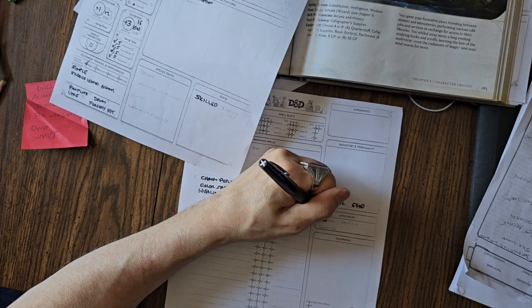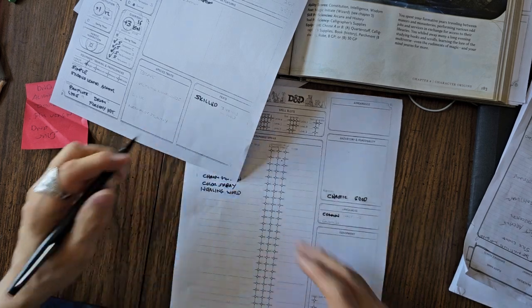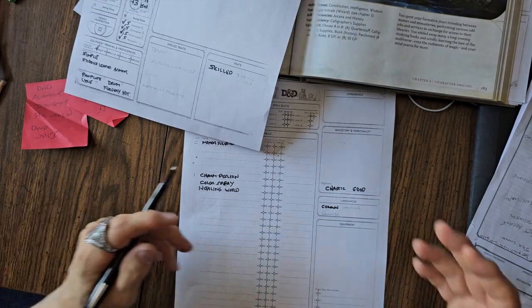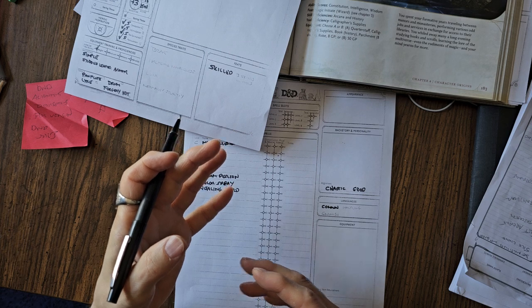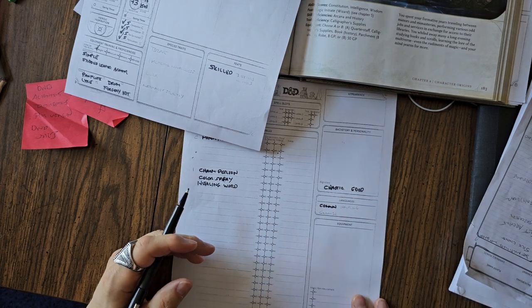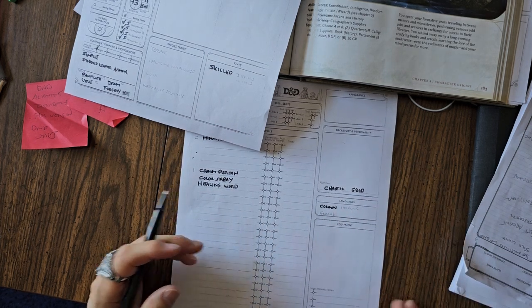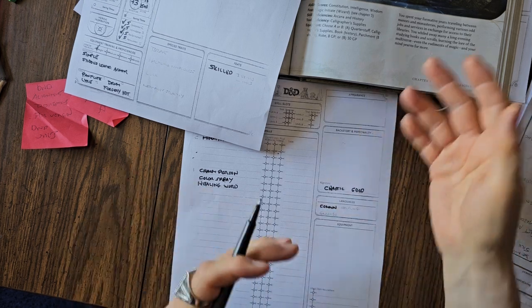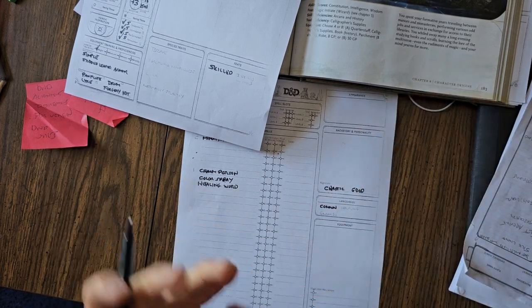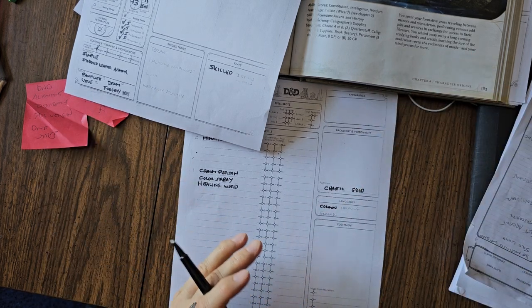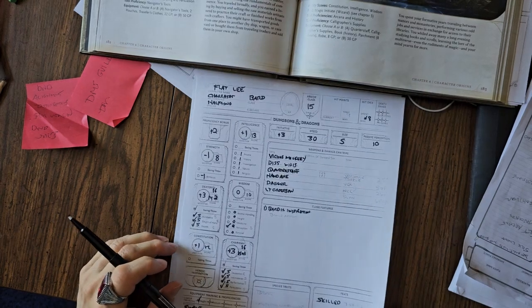I gave him Common, Halfling, and Gnomish. Before you add all the weapons, because of your background and the bard build, you end up with 140 gold pieces. So if you want to start with 140 and then deduct the things that you buy, like your studded leather armor and your weapons, go right ahead.